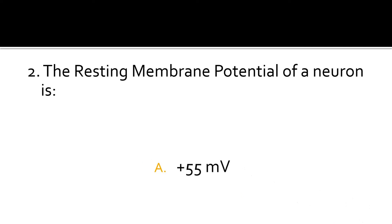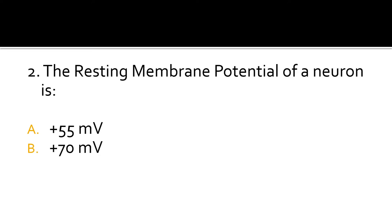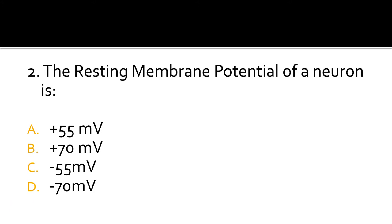Question 2. The resting membrane potential of a neuron is: plus 55 millivolts, plus 70 millivolts, minus 55 millivolts, or minus 70 millivolts. The correct answer is D, minus 70 millivolts.